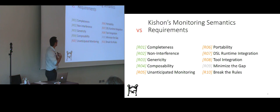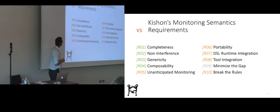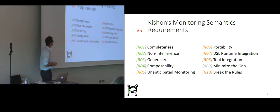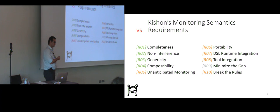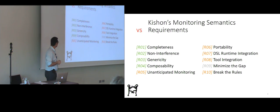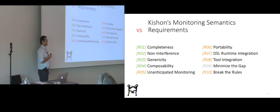Now looking at the requirements we listed: this solution achieves completeness because we'll be able to observe all the effects of application of all semantic rules on each node of the AST, on each syntactic term. In their paper the authors prove the non-interference of this monitoring scheme with respect to the execution of the language. The approach is generic because we can define our own monitoring functions, enabling all kinds of diagnostic tools. It's composable, which is very nice.